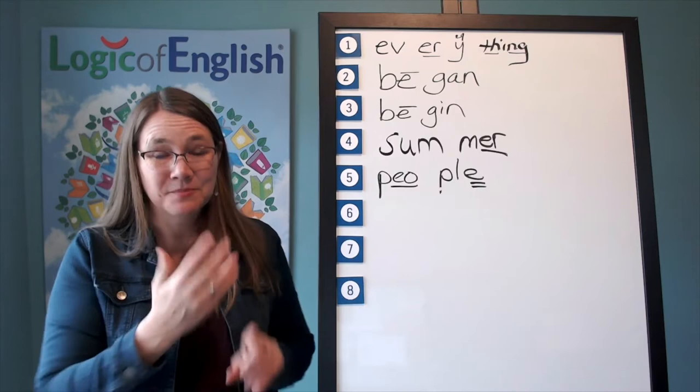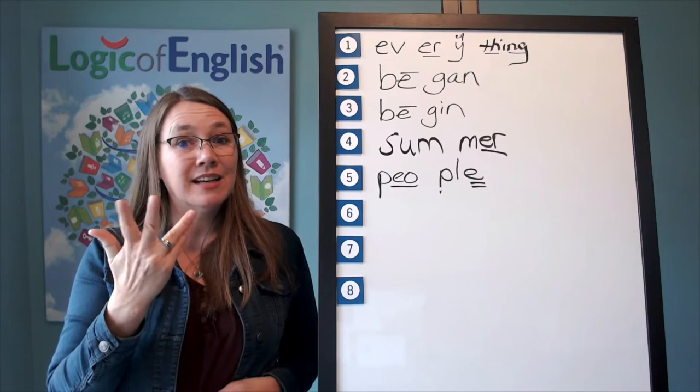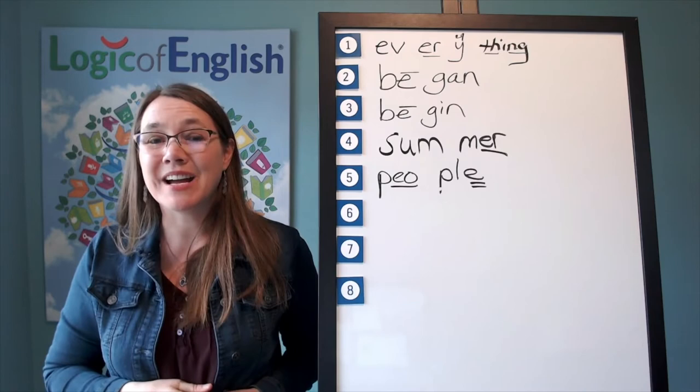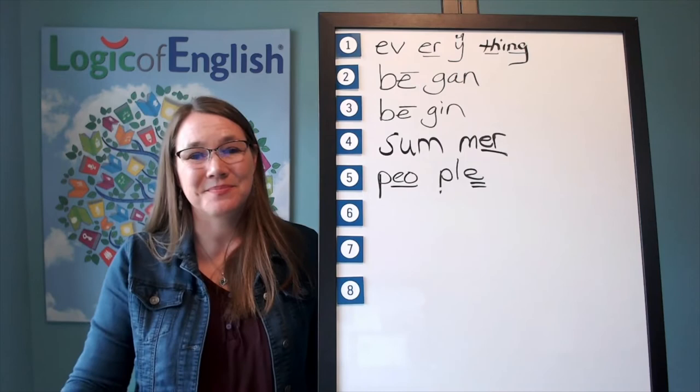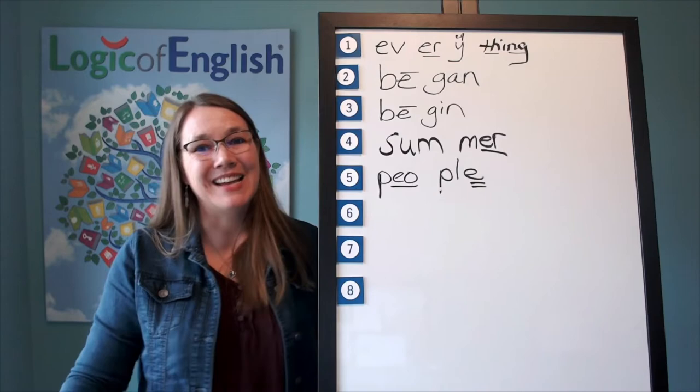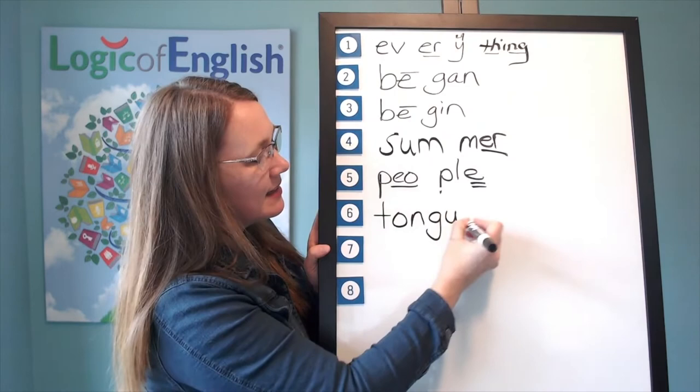And what will we need? You're right. We'll need a silent final E. Let's do that one more time. Tuh-ah-n-guh. Two-letter guh. Silent final E. Go ahead and write tongue. Sound it out as you write it. Tuh-ah-n-guh. Silent final E.